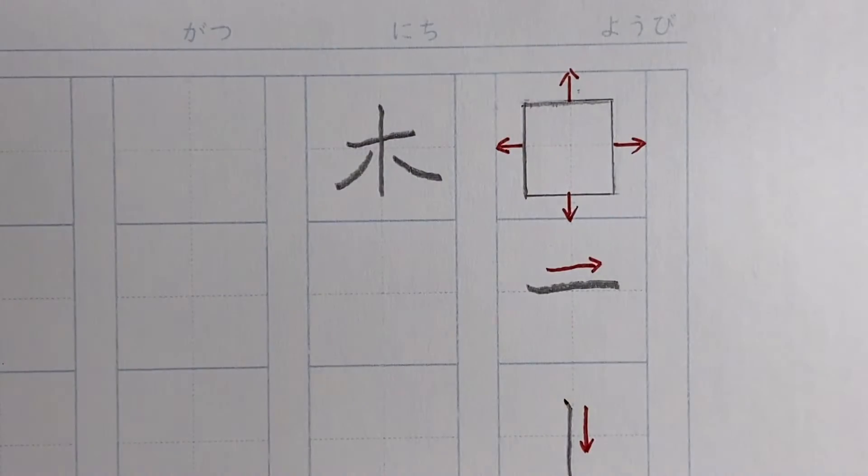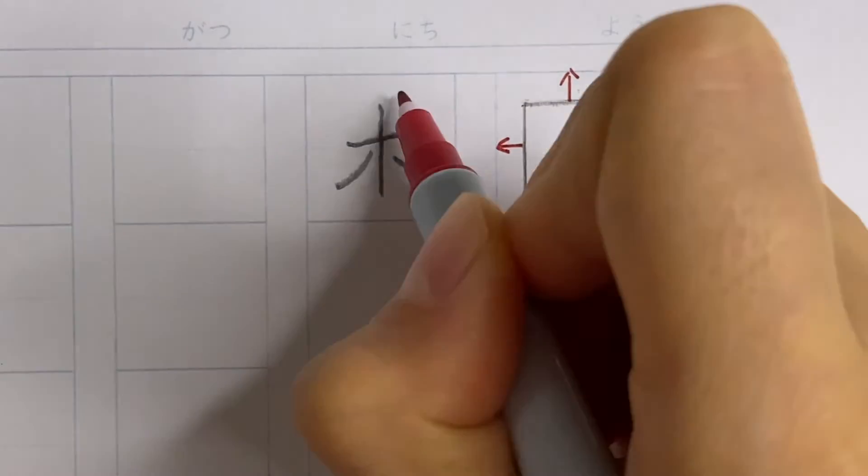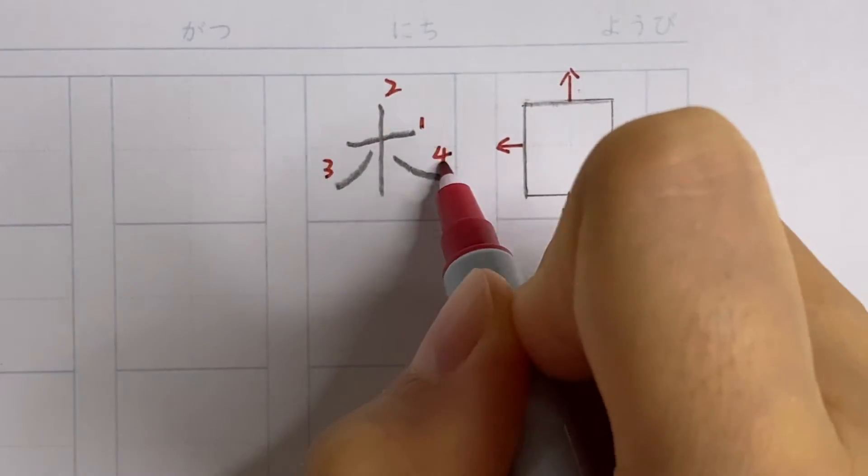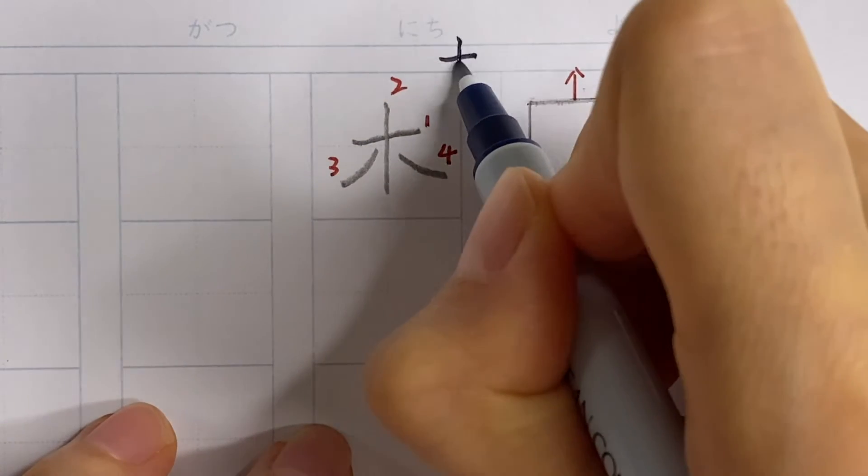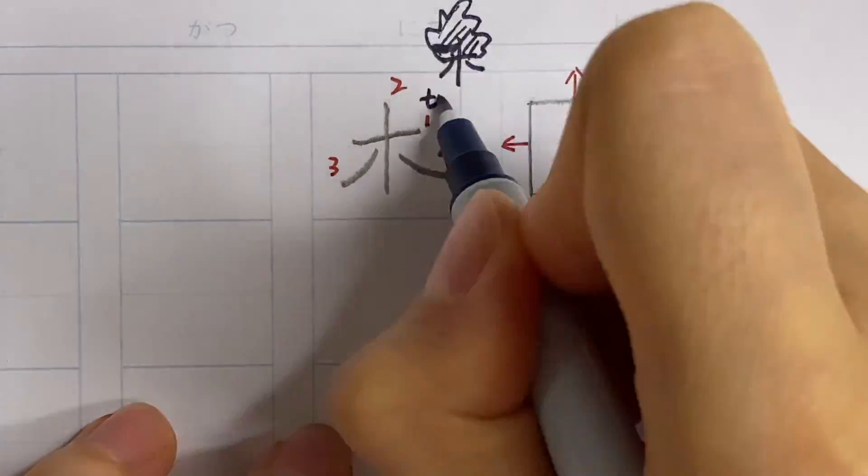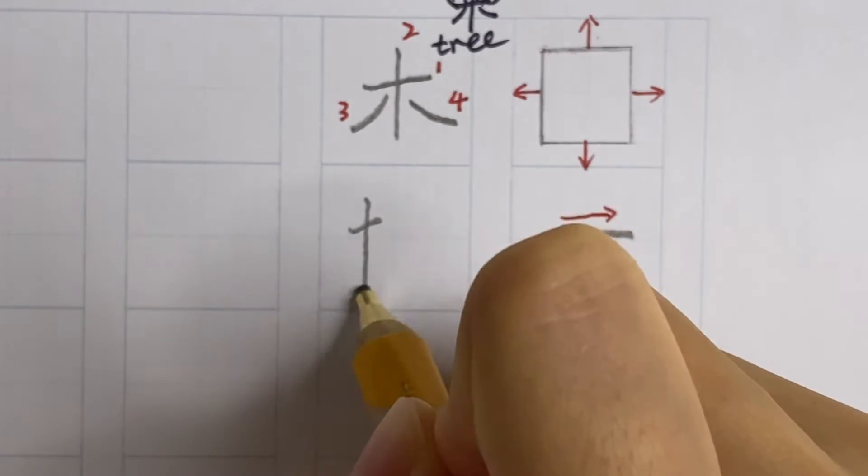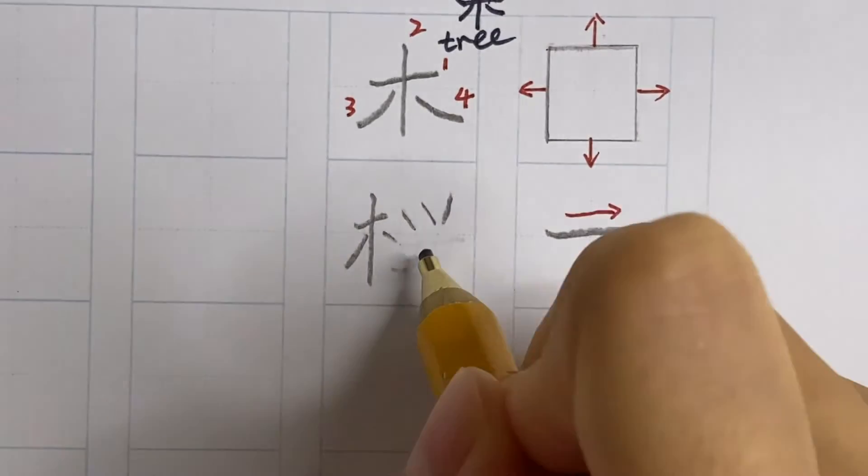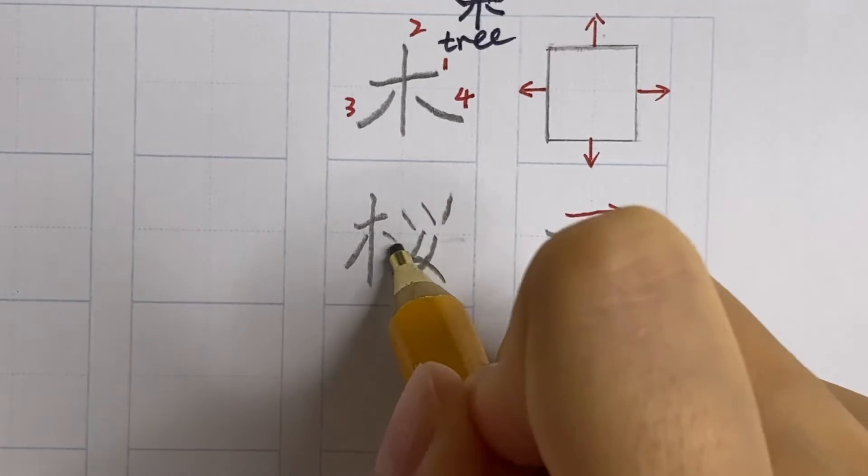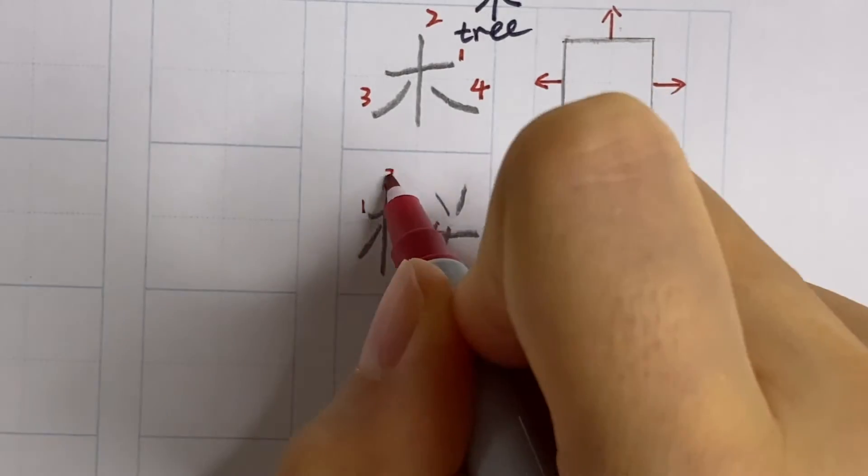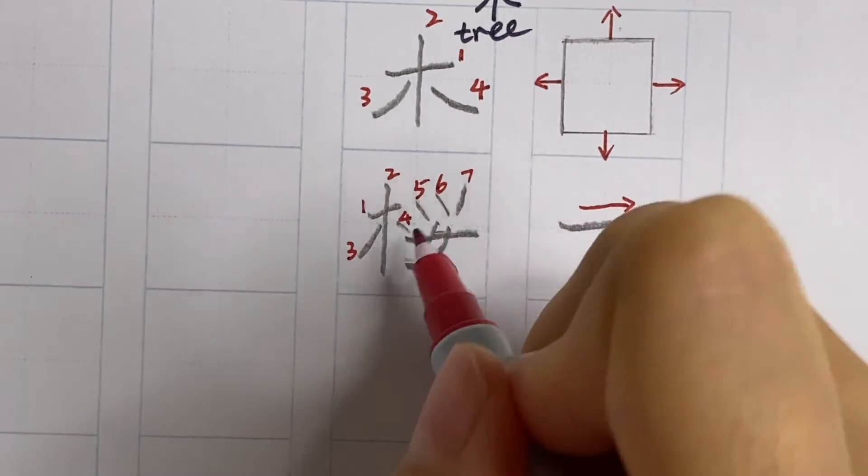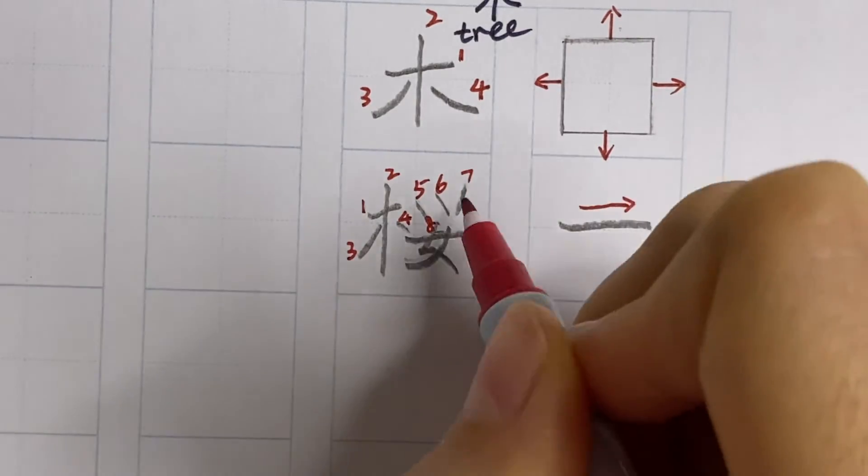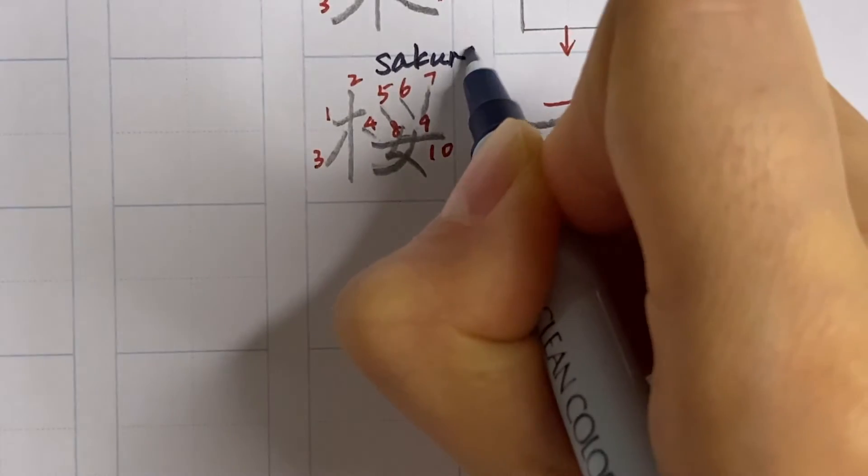The next common component is symmetrical. So we have to draw the cross first, and followed by the left stroke and right stroke. And this means the tree or wood, ki. When it's used as a radical, sometimes it's on the left. And this indicates it's a kind of a tree. And this is our sakura, cherry blossom tree.